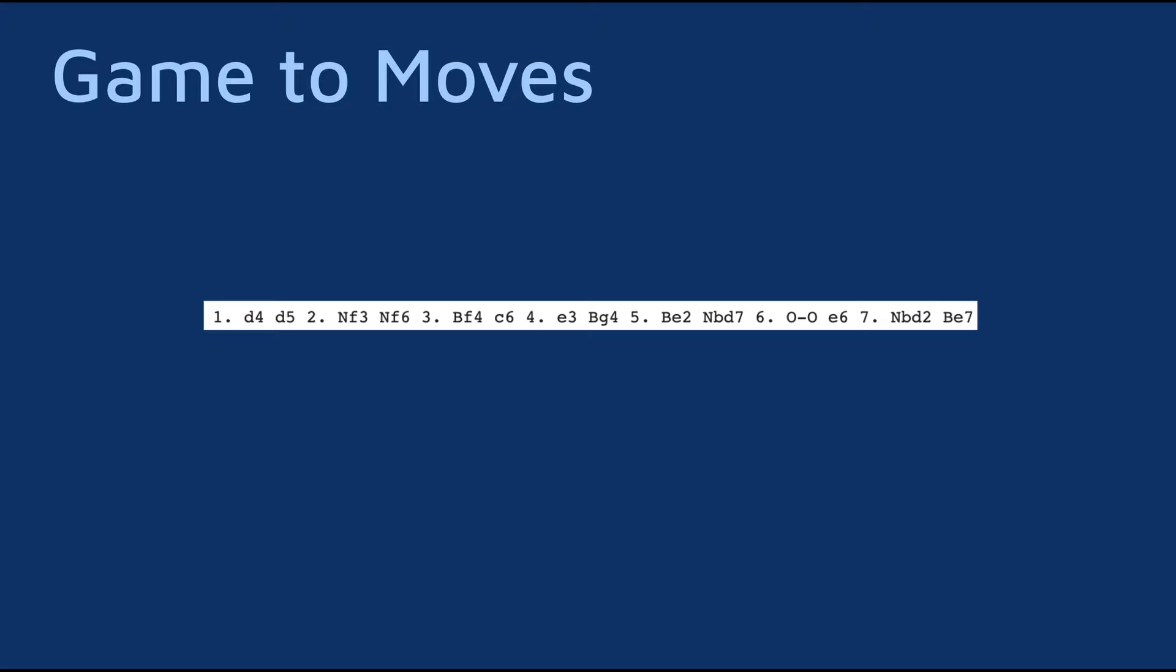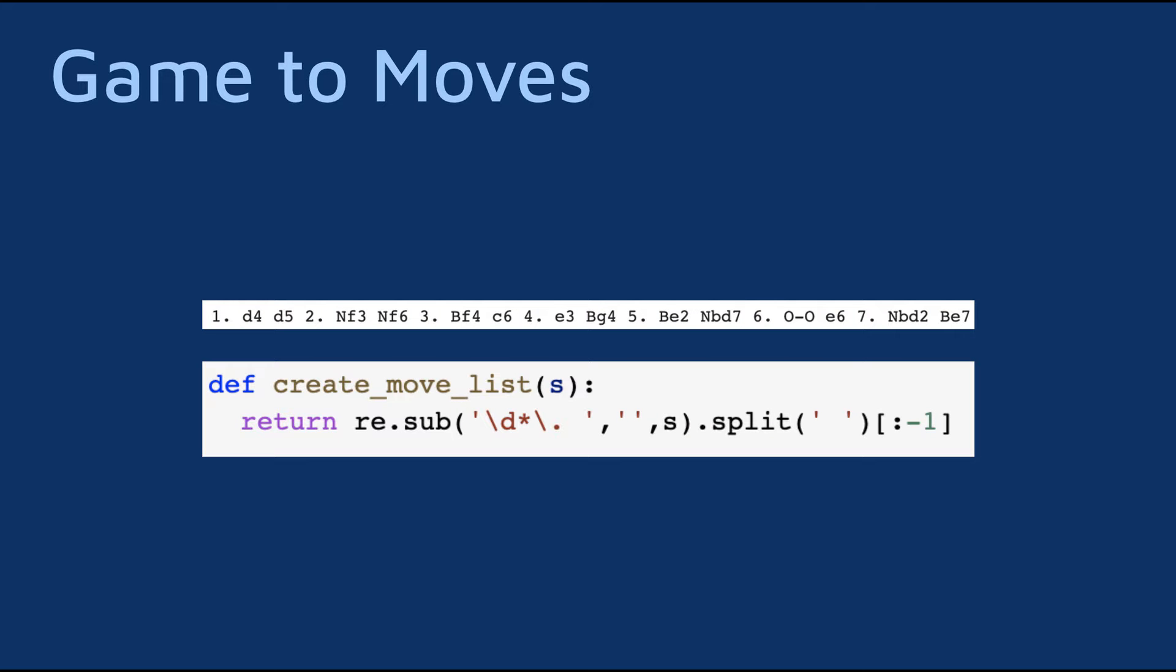There is one more thing we need to do before we can assemble the PyTorch dataset: break down the game into individual moves. The raw dataset provides the game in the following format, as a sequence of standard algebraic notation moves. To make this easier to work with, we can use the createMoveList function to substitute each number followed by a dot and a space with an empty string, and then split it by white spaces. This will give us a list of moves that we can loop through and convert into the matrix representation we discussed earlier.